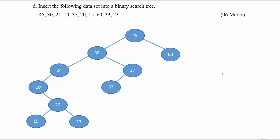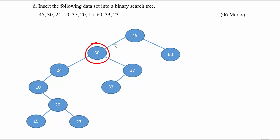The starting number is 45, and it becomes the root of this tree. The second number is 30 — 30 is less than 45, so it goes to the left-hand side. The third number is 24 — 24 is less than 45 (left), and less than 30 (left), so mark it there.